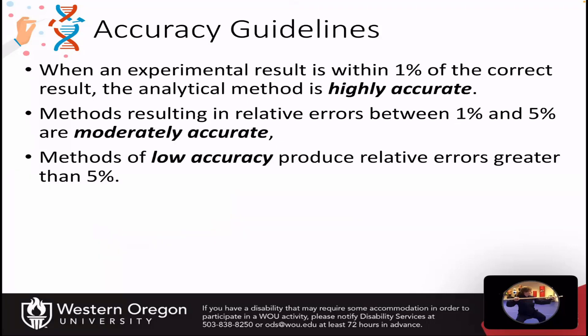Why is this important? You need to think about the accuracy you need to achieve within your experimental regime. When an experimental result is within 1% of the correct result, the analytical method is considered very highly accurate. Methods with relative errors between 1% and 5% are moderately accurate and mostly acceptable in research — you want to be within 5% of a real value. If your relative error is greater than 5%, this represents a low accuracy procedure and you want to avoid that. When doing experiments in the lab, aim for at least moderately accurate with a relative error between 1% and 5%.